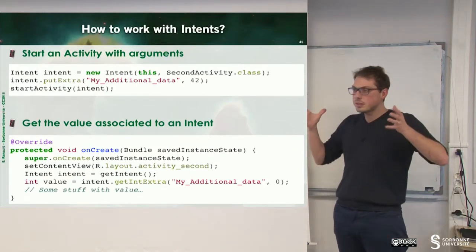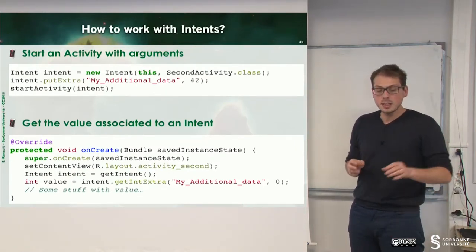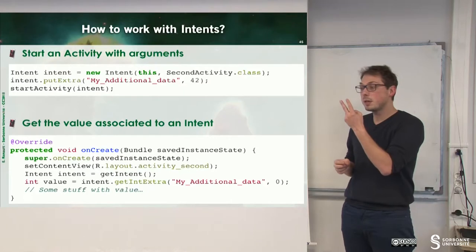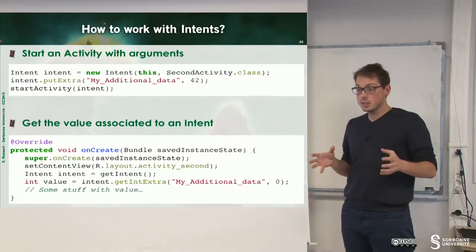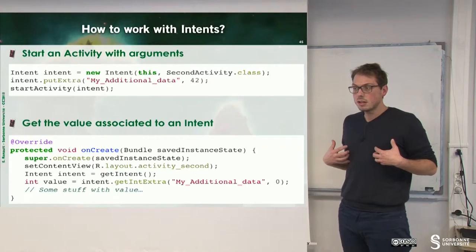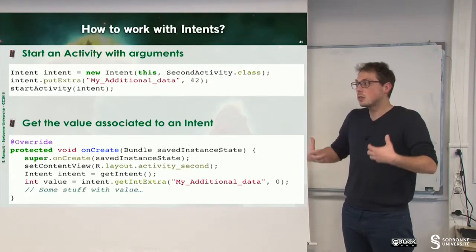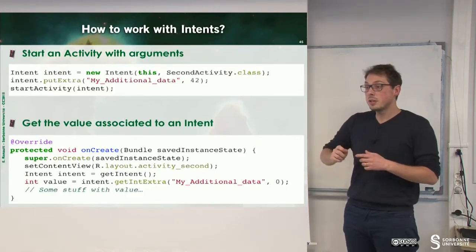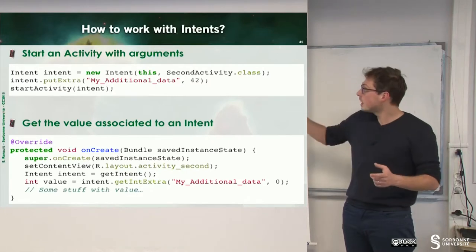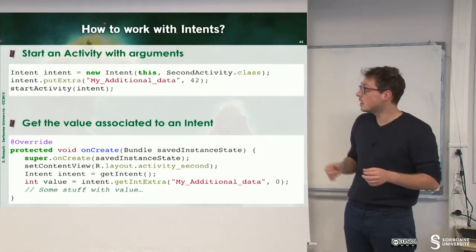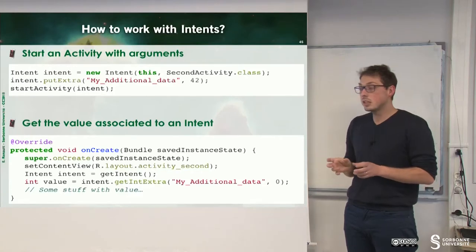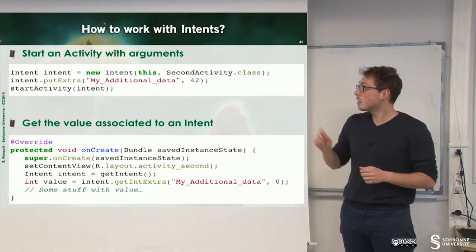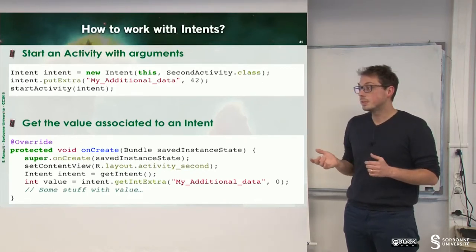Now that we have understood how intents work, we can start an activity only by creating the intent. Here we can see that the intent has two parameters. The first one is, what is the current context? This. I'm displaying, I'm on the top of the backstack, so I can have a decision. And the second one is who I want to run. Here is the second activity. We can also fix some additional data inside of the intent. It's an associative key value type. And we can run start activity with the intent.